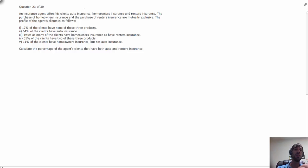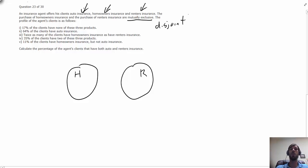When you're reading through a problem like this, there's three groups—the auto owners, the homeowners, and the renters—and one key bit of information here is that the homeowners and renters are mutually exclusive events. Mutually exclusive means that if this is a Venn diagram of homeowners and renters, there is no overlap between these two circles.